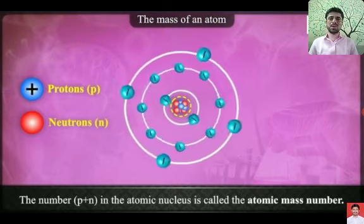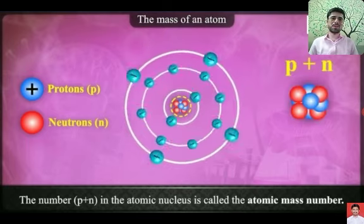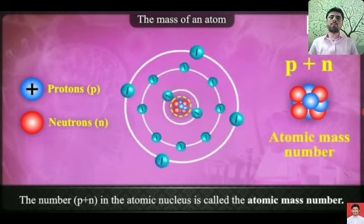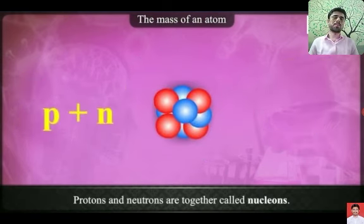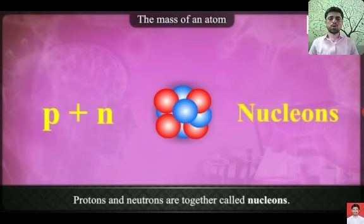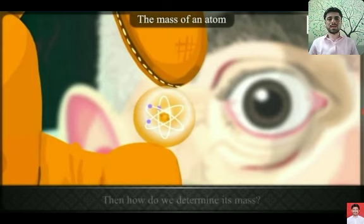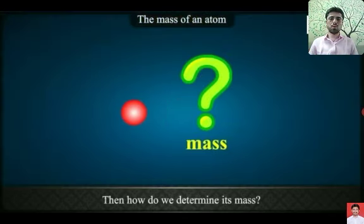As you can see on the screen, protons and neutrons are present in the nucleus. The sum of the number of protons and neutrons gives the atomic mass. Protons and neutrons together are called nucleons. An atom is a very tiny particle.